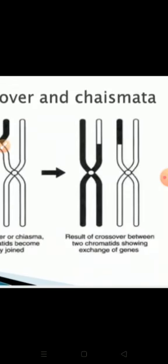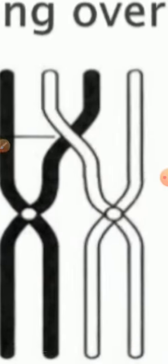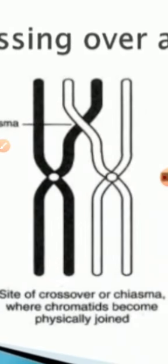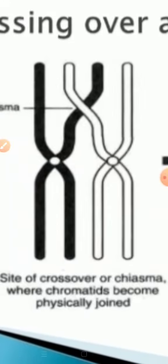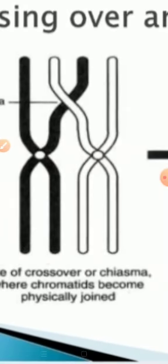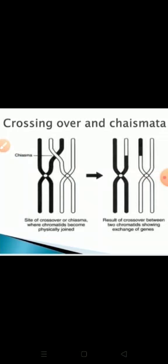The exchange of chromosomal segments between non-sister chromatids is called crossing over. After crossing over, separation of the homologous chromosomes takes place. This separation process is called terminalization. This completes the mechanism of crossing over.